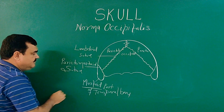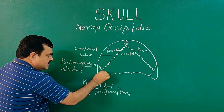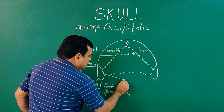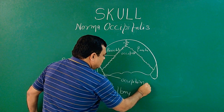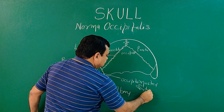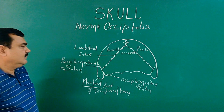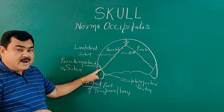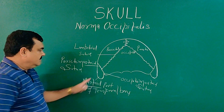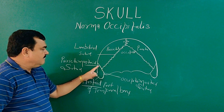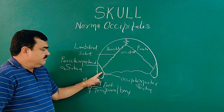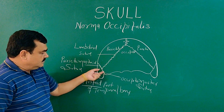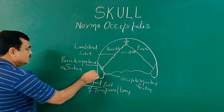Here you can see the occipital bone and the mastoid bone. The suture from here to here is the occipito-mastoid suture. The joining point where the lambdoid suture, parieto-mastoid suture, and occipito-mastoid suture meet — where three sutures join — this point is known as the Asterion.